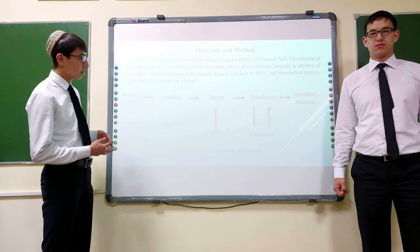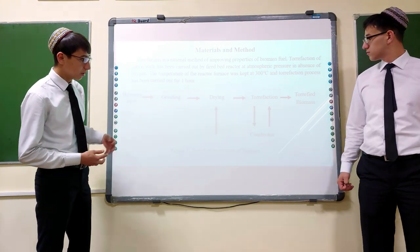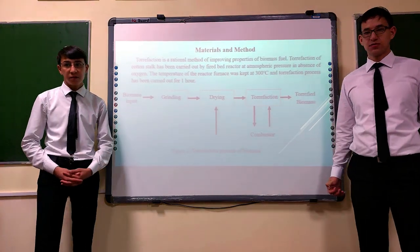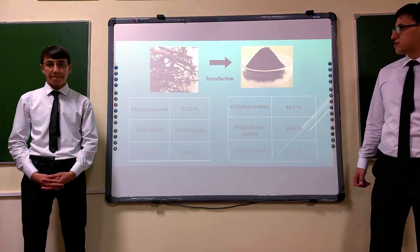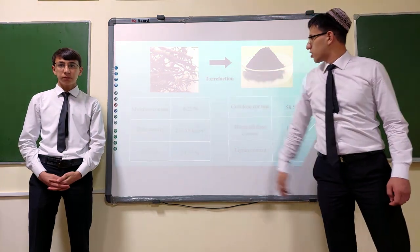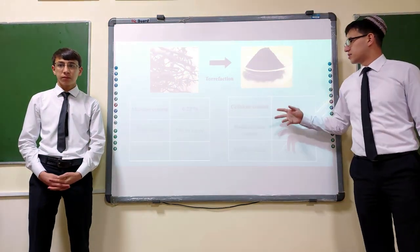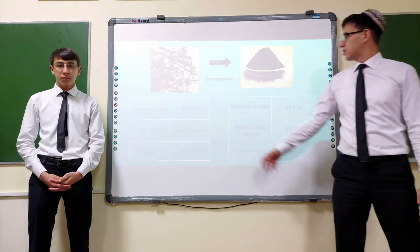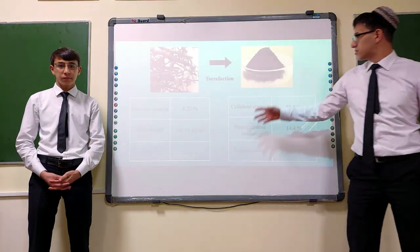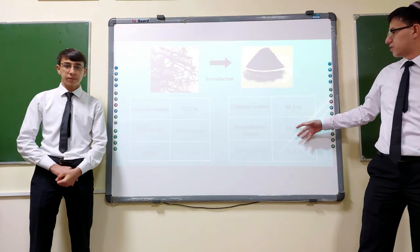This picture shows torrefaction process of biomass: input, then grinding, then drying, after torrefaction, after combustor, and end of the torrefaction biomass. In this picture, this is the cotton stock and this is torrefaction product. This is content of cotton stock and this is torrefaction product of contents.